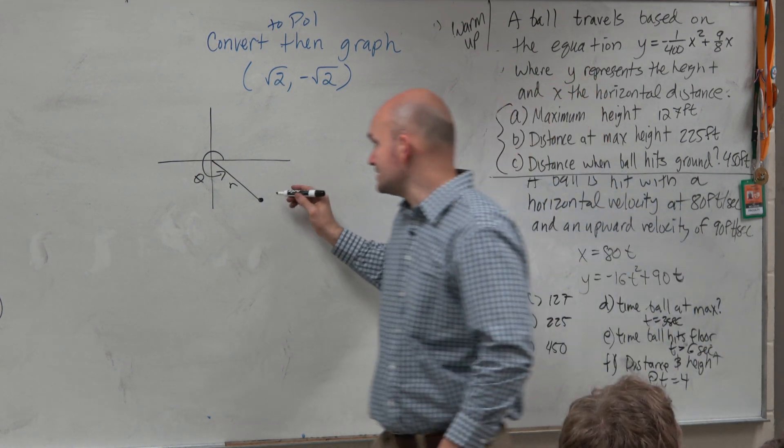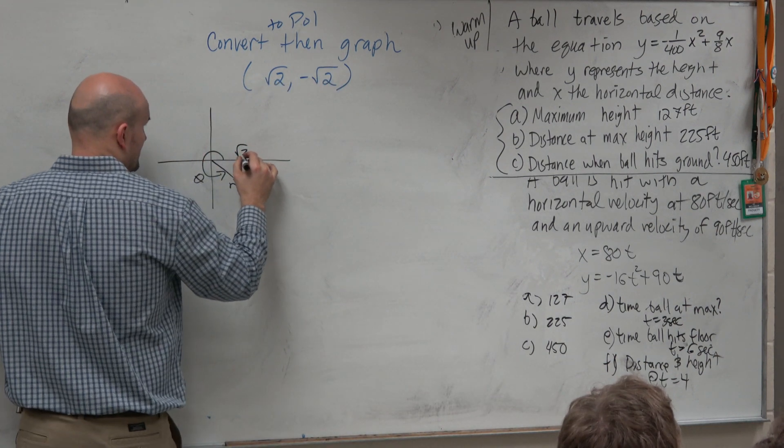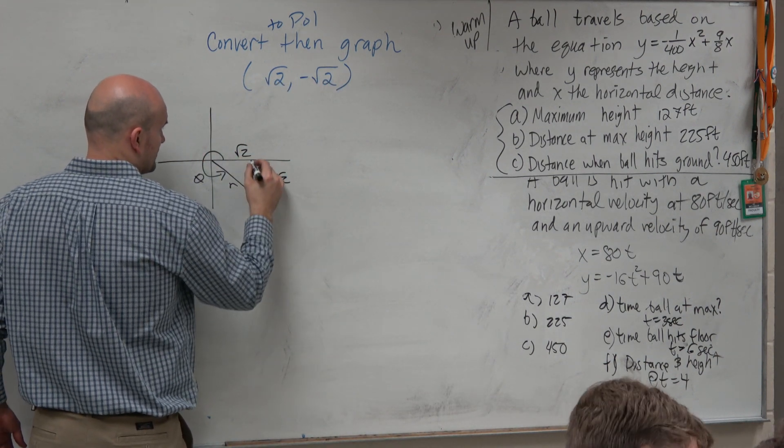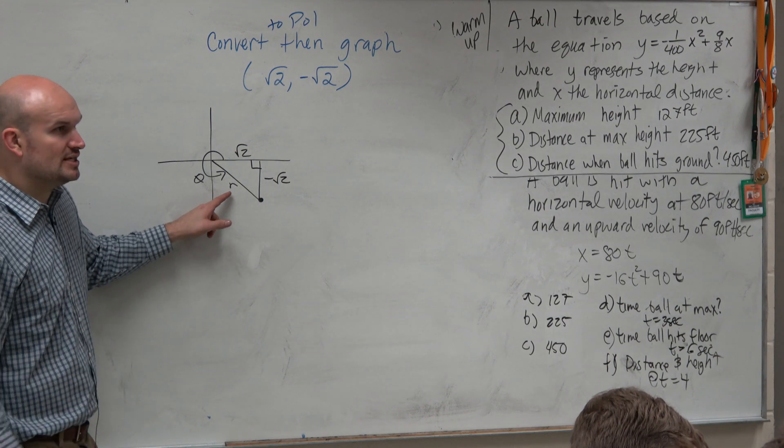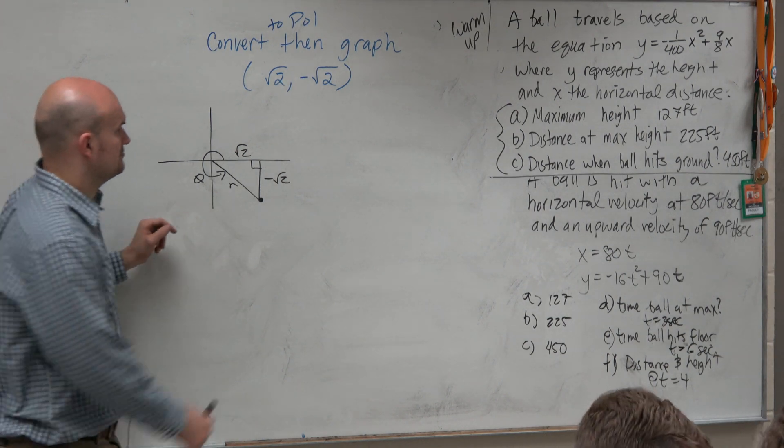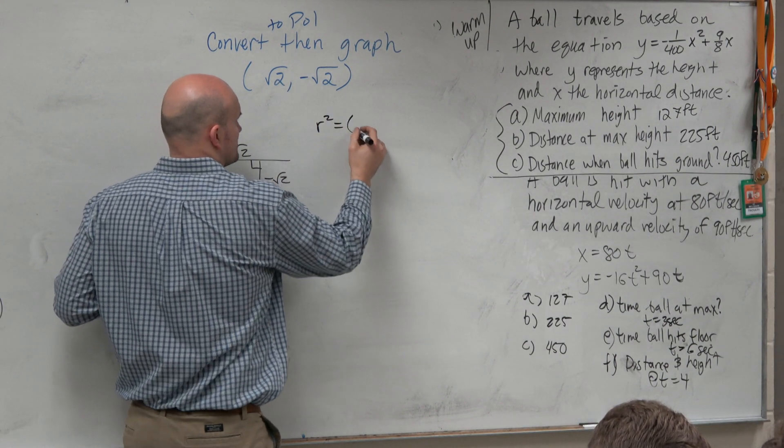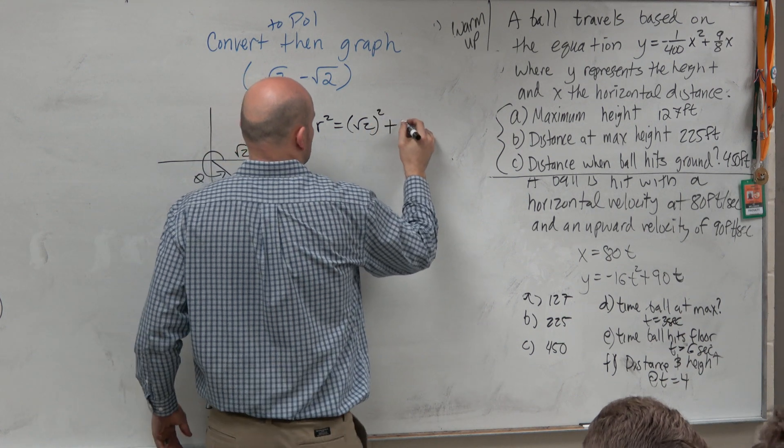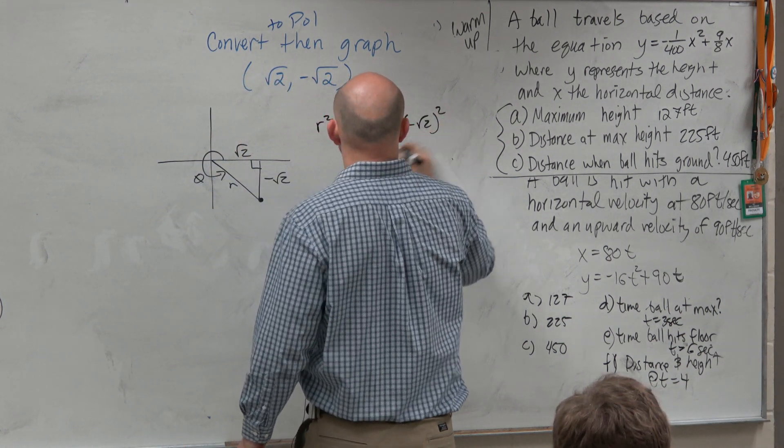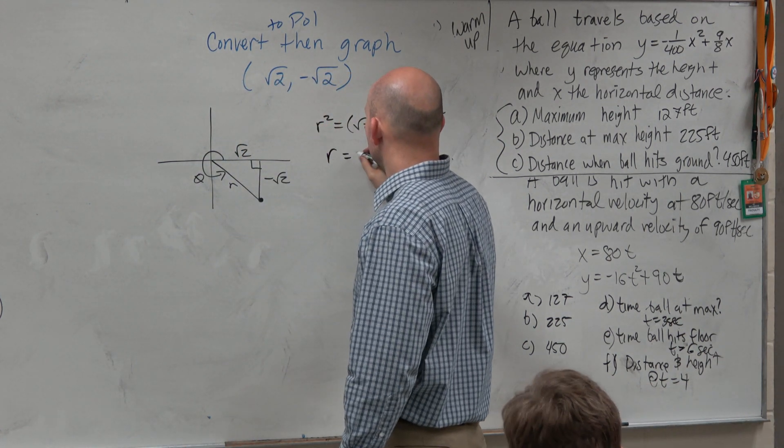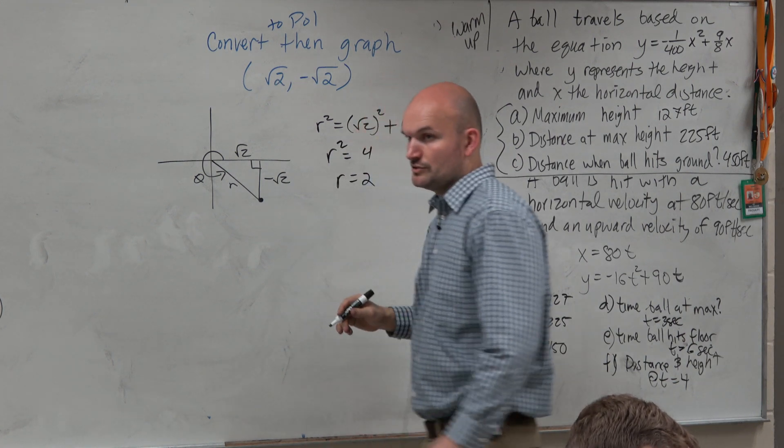Well, we know these coordinate points. We know this is square root of 2 and this is negative square root of 2. So can I figure out what r is? Sure. r squared equals square root of 2 squared plus negative square root of 2 squared. r is equal to, r squared is equal to 4, r is equal to 2.